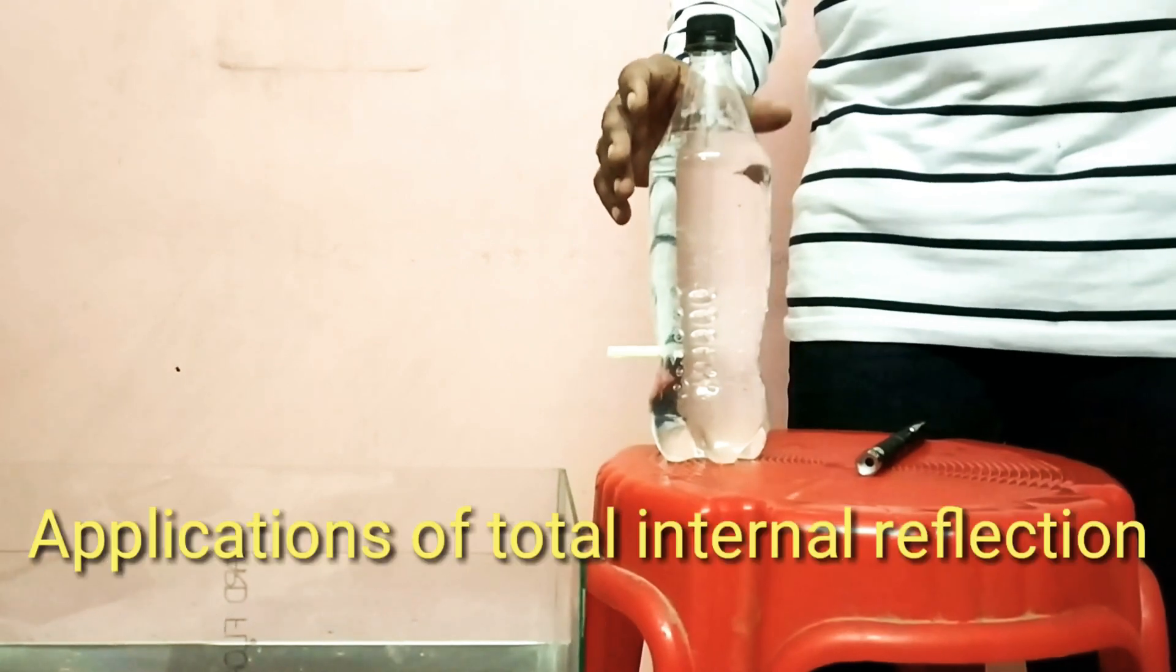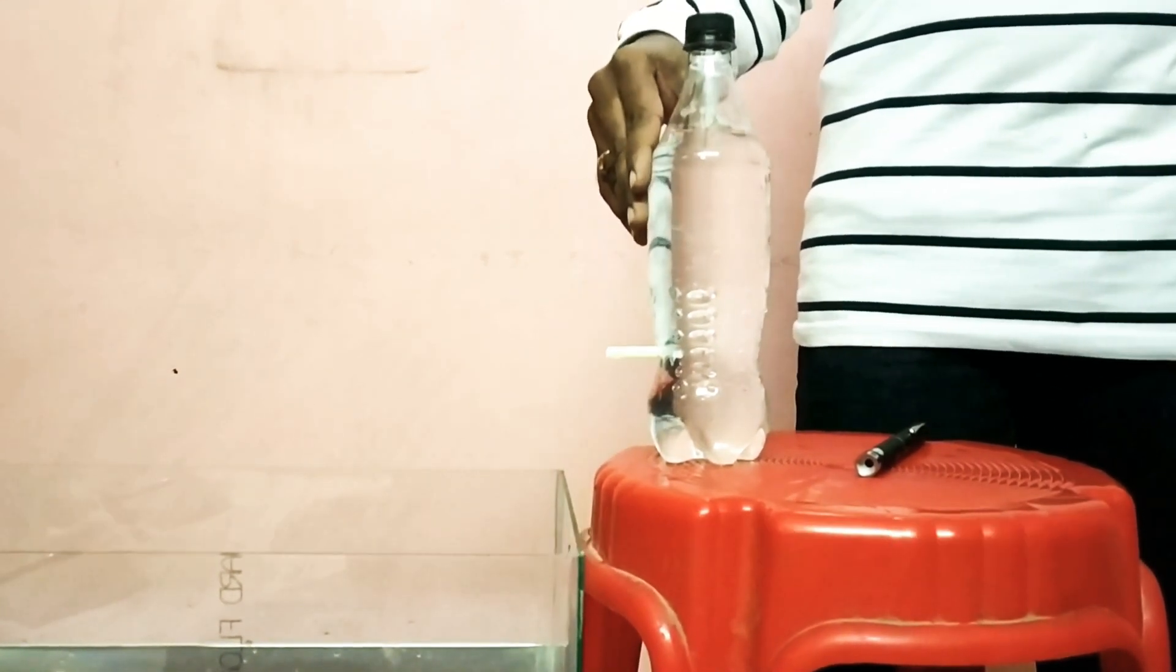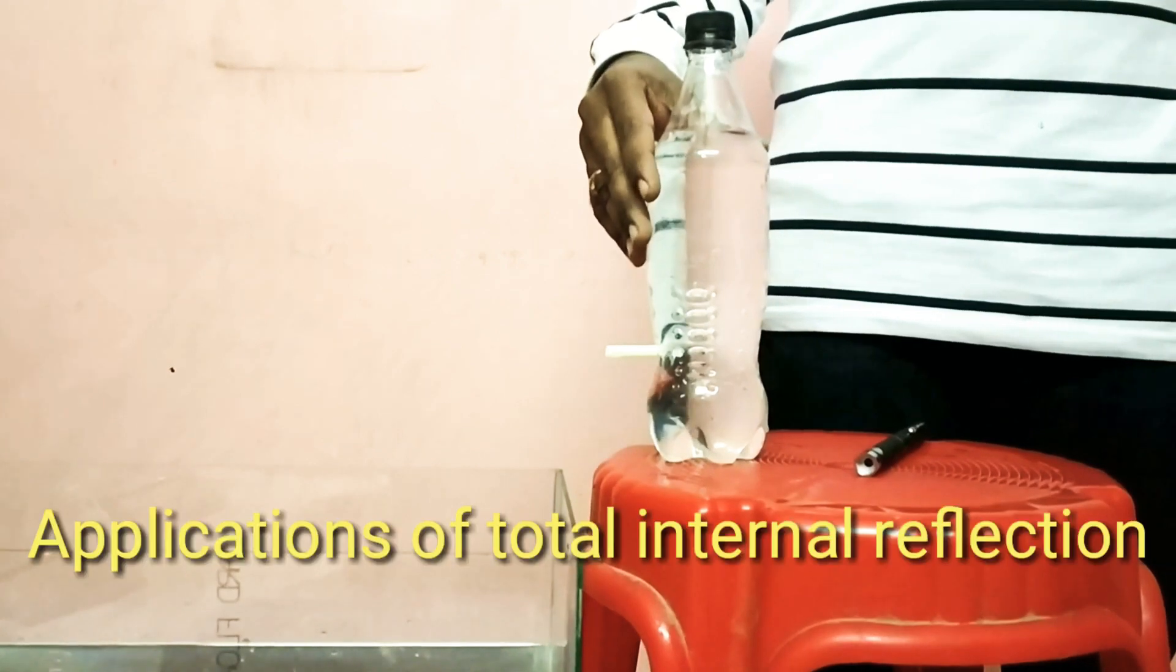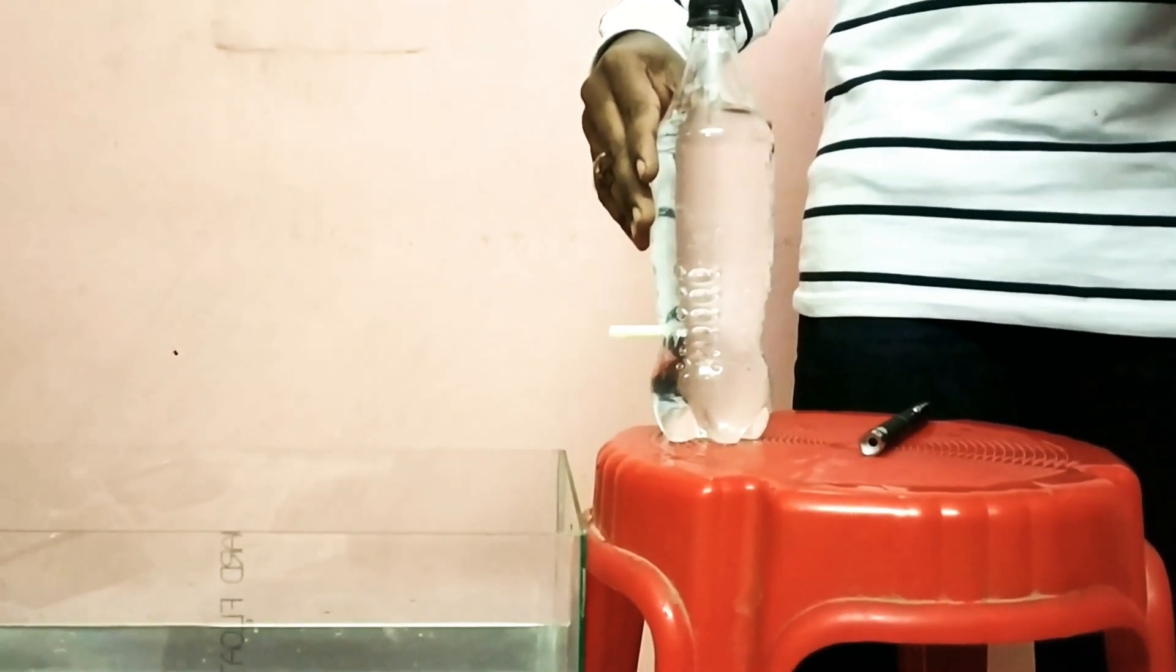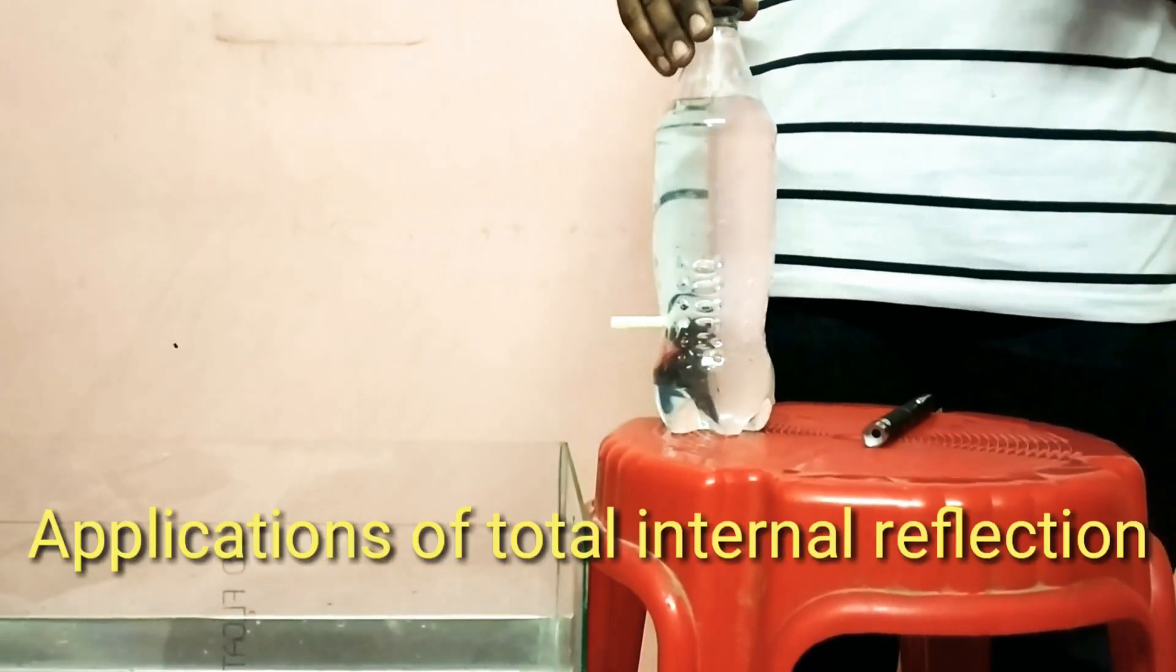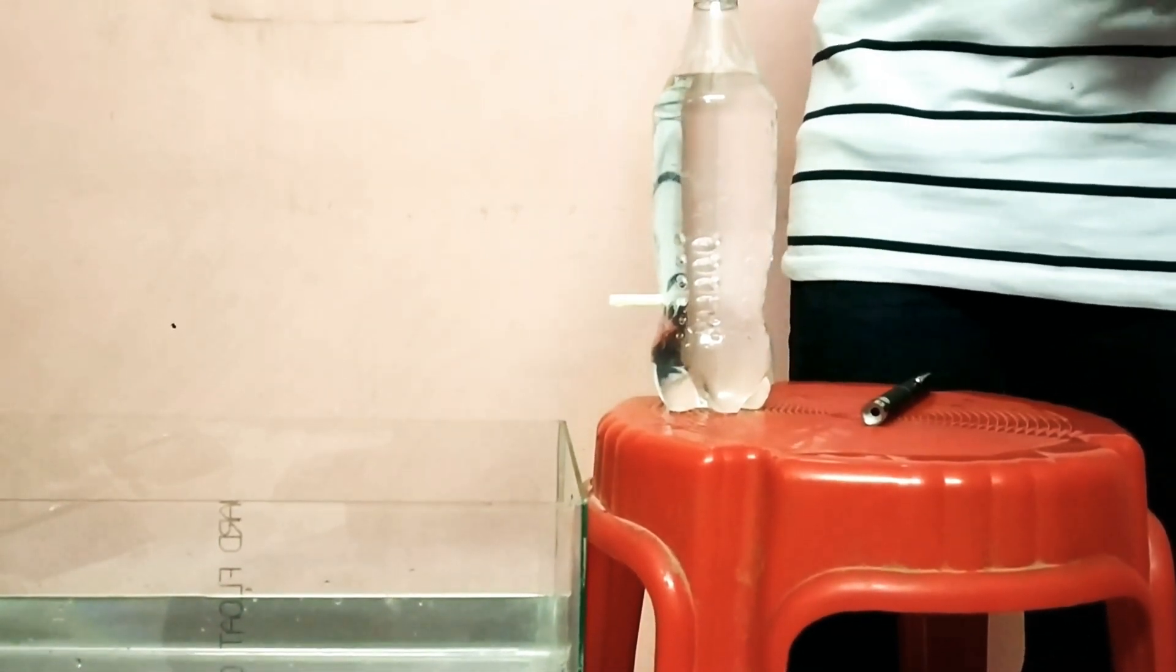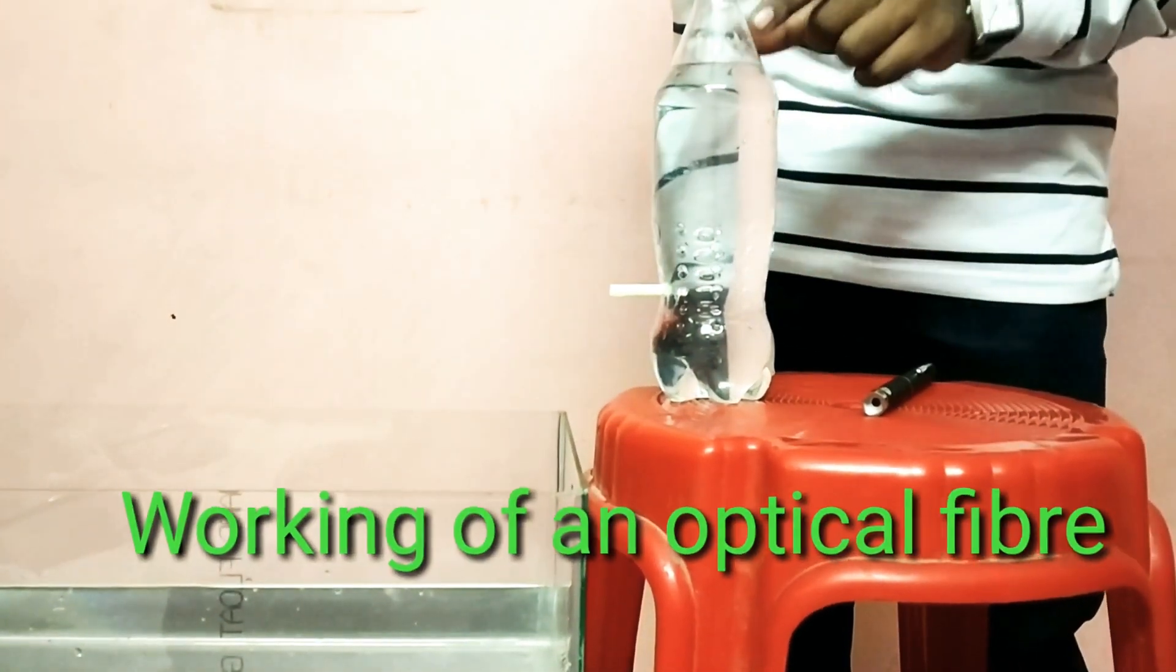Now let us see the applications of total internal reflection. Total internal reflection has many applications like diamonds sparking because of total internal reflection. Also, mirages that appear during sunny days are due to total internal reflection. We have optical fibers which can transmit thousands of phone calls at a time - also an application of total internal reflection. Now this is a small model of how optical fiber works.